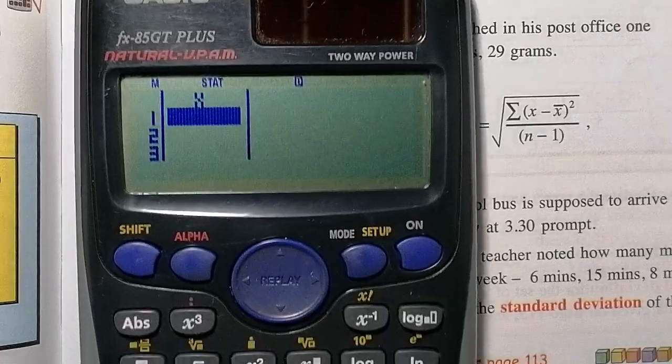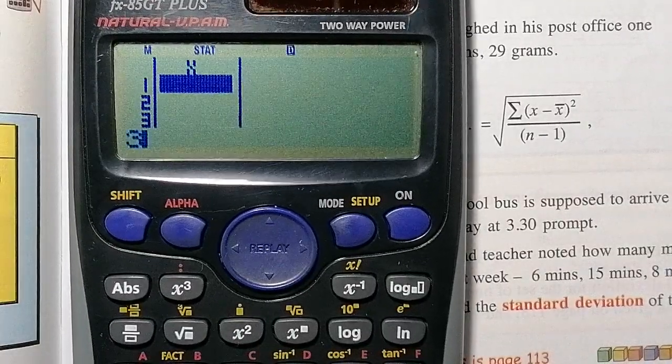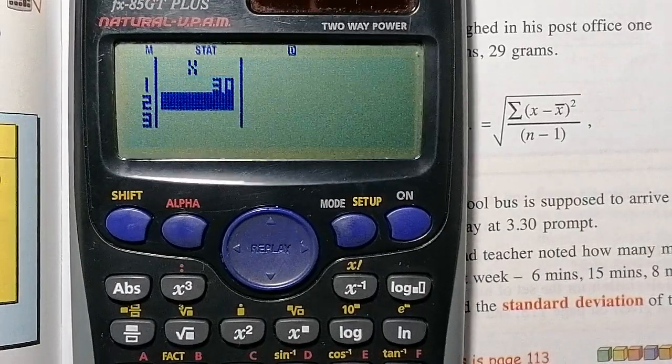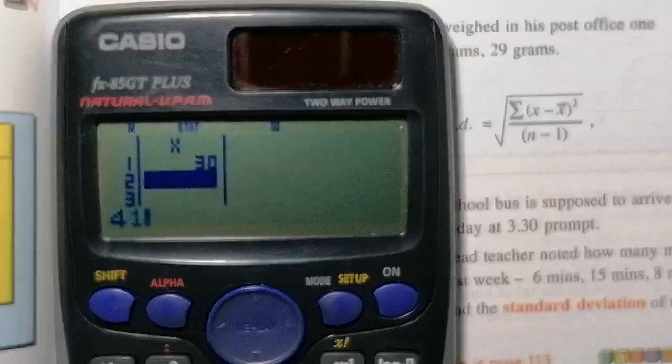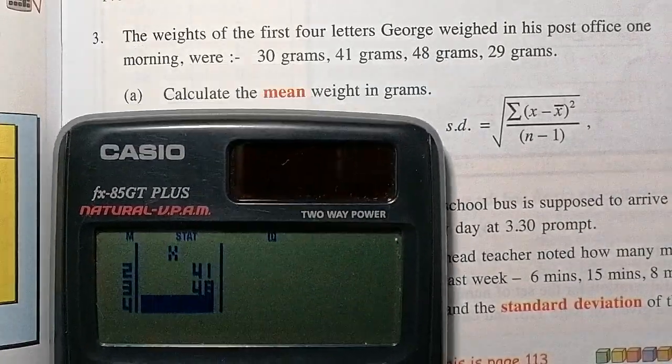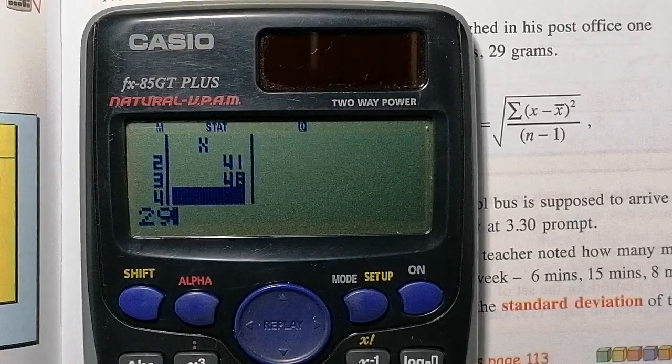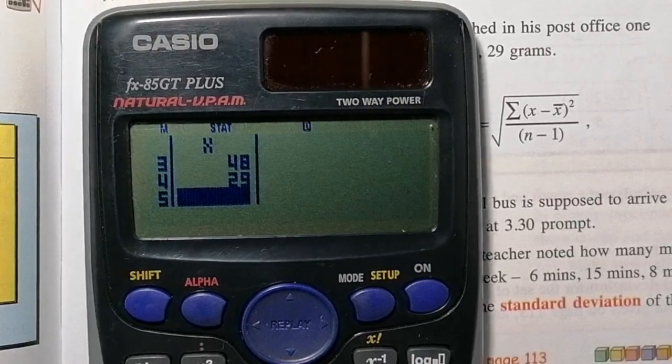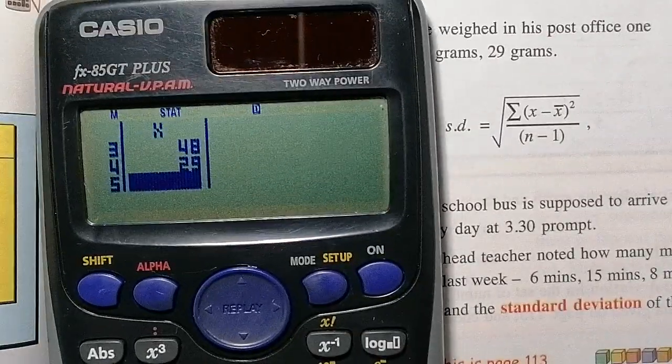So 30, 41, 48. So here we go. I'm putting in 30, pressing equals. The next one's 41, pressing equals. I'm pressing 48, equals button, and then I'm pressing 29, and then the equals button. So that's where we've got the four values in the calculator just now.